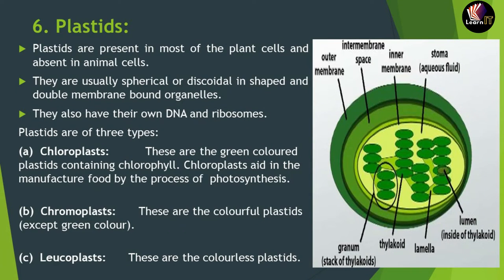The sixth organelle is plastids. These are present in most plant cells and are always absent in animal cells. They are spherical or discoid-shaped, have a double membrane, and also contain their own DNA and ribosomes. Plastids are of three types: chloroplast (green colored), chromoplast (colorful, excluding green), and leucoplast (colorless plastids).